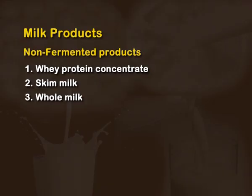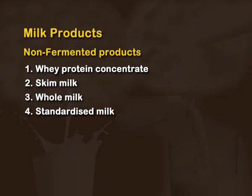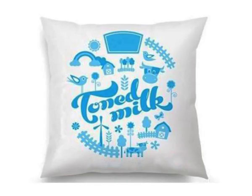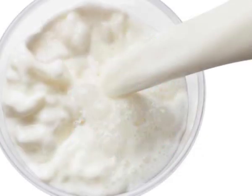Standardized milk is the one where the fat content is standardized to 4.5 percent and it is a mix of buffalo milk and skim milk. Toned milk is the one commonly found in packets. Its protein content is standardized to about 3.5 percent, solids not fat to about 8.5 percent, and it is made up of buffalo milk and skim milk powder.